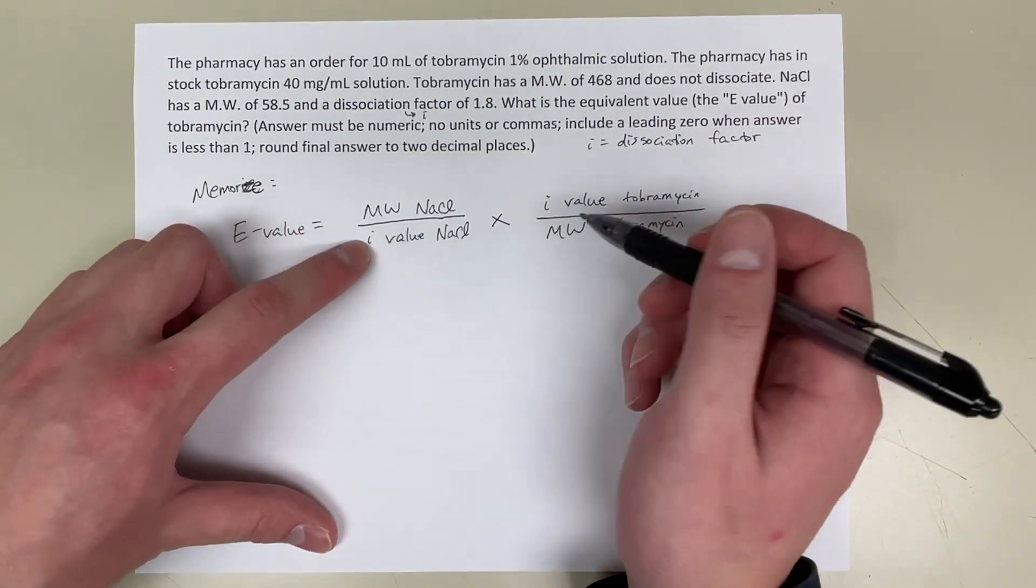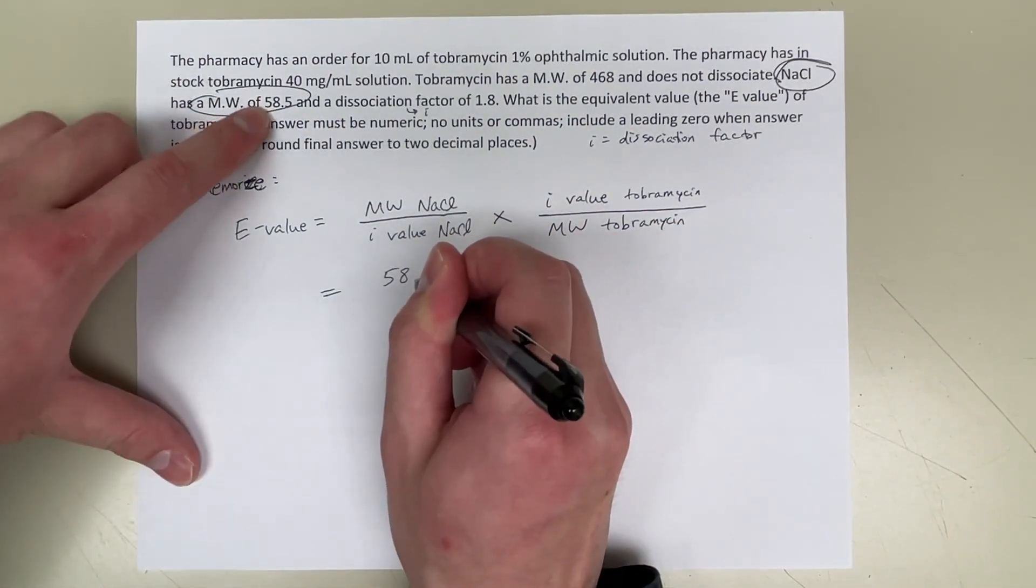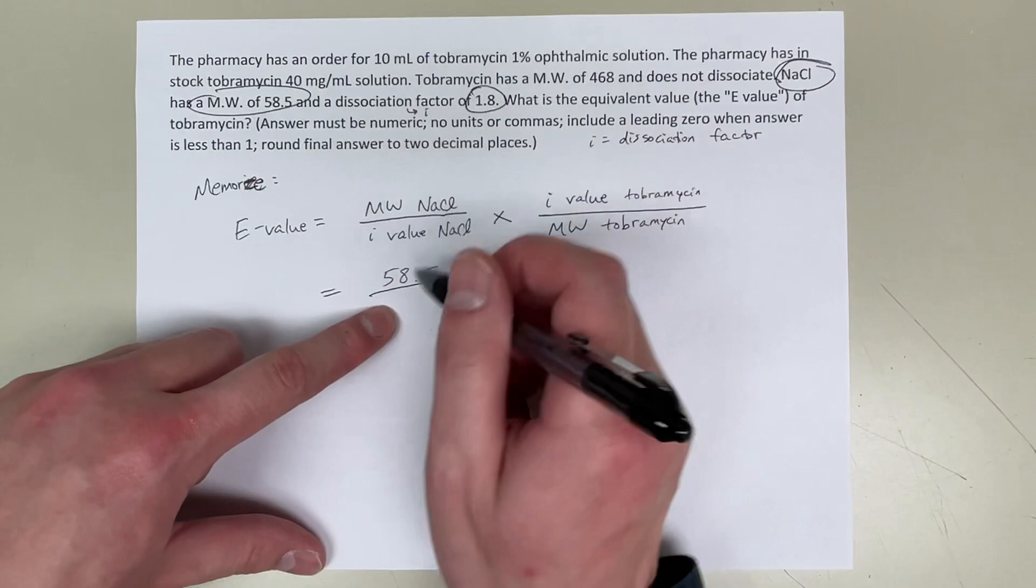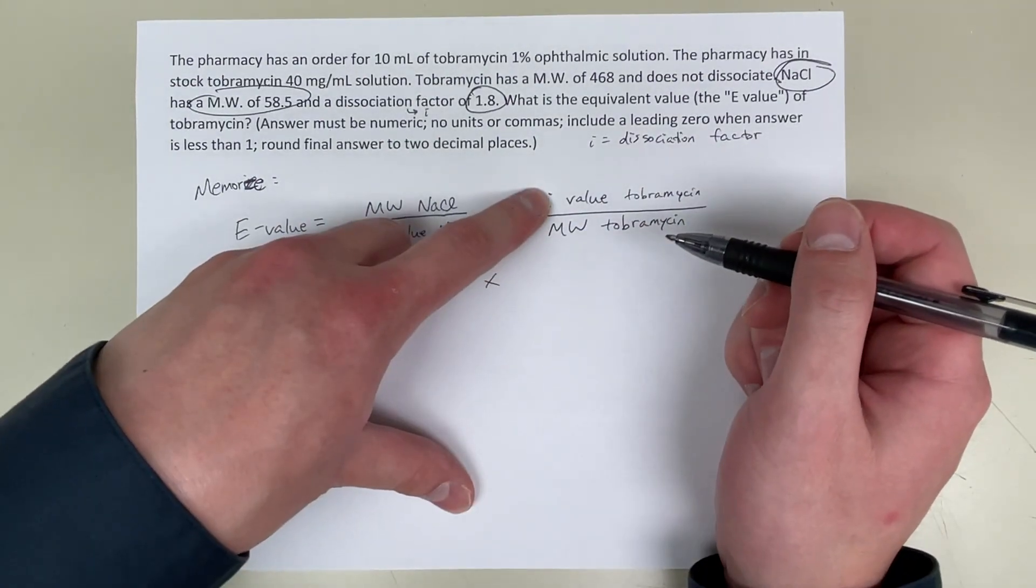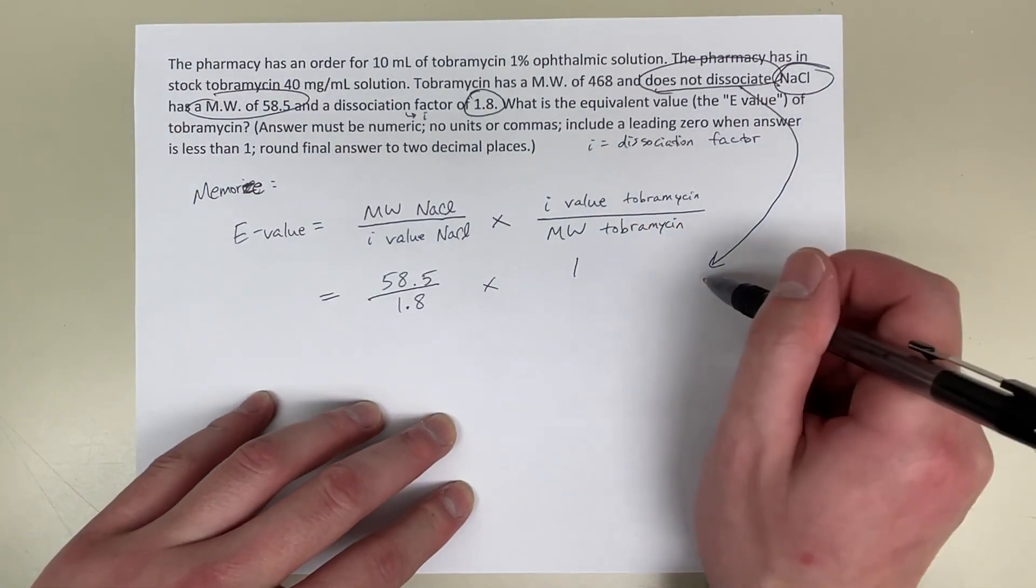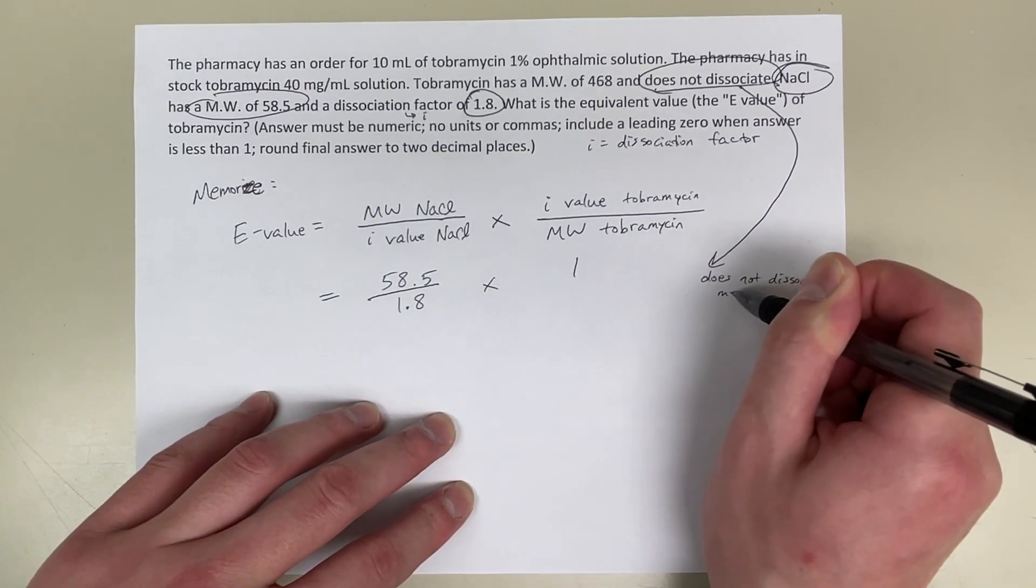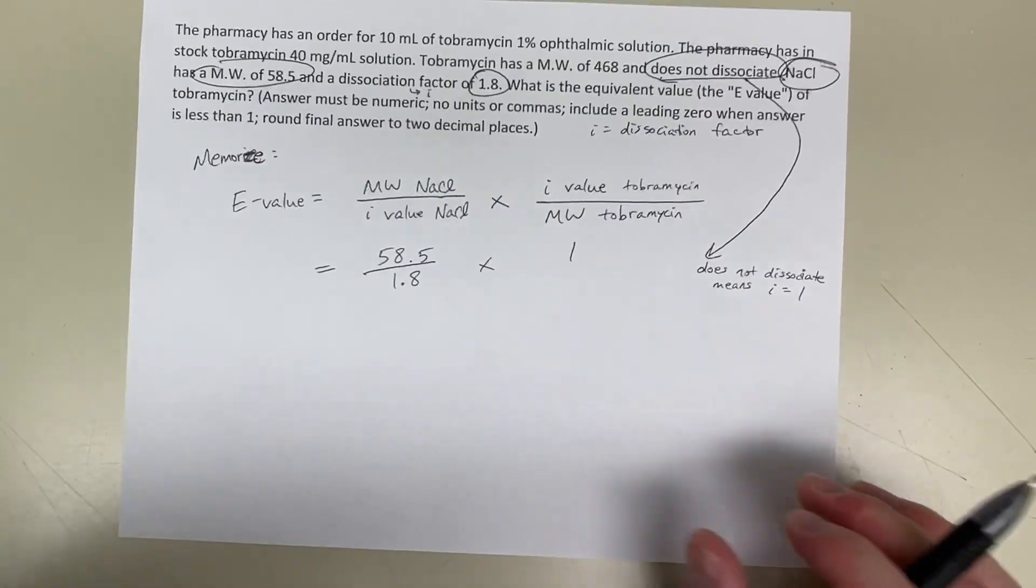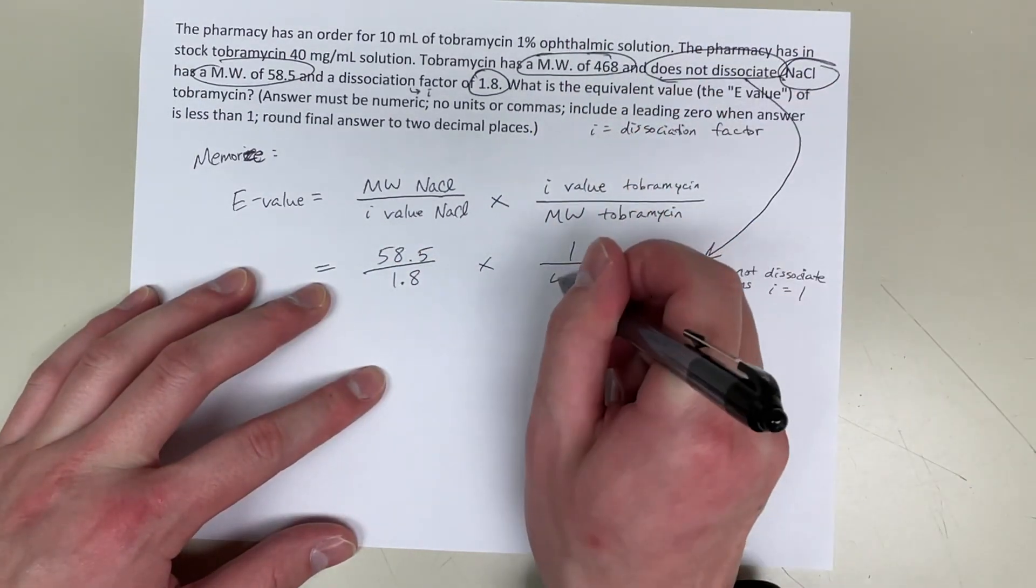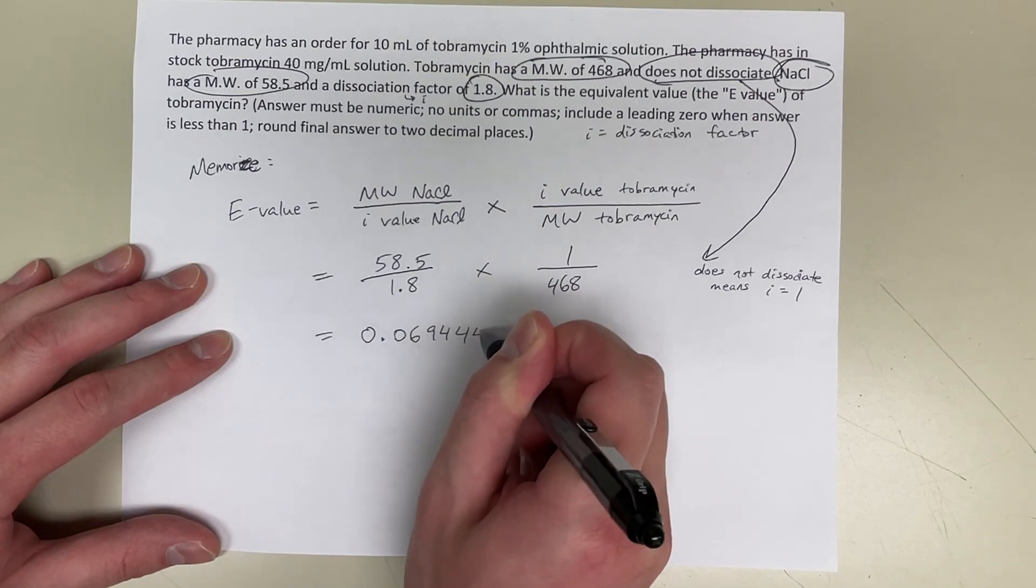So now I'm going to plug in the numbers. Molecular weight of sodium chloride is 58.5 divided by the dissociation factor, which is the I value of 1.8. Multiply it by the I value of topomycin. The question says it does not dissociate, which means the I value is just 1, all divided by the molecular weight of topomycin, 468. When you solve for this, that equals 0.06944444.